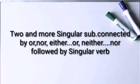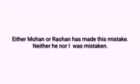Two or more singular subjects connected by 'or,' 'nor,' 'either...or,' or 'neither...nor' always take a singular verb. For example: 'Either Mohan or Rohan has made this mistake.' 'Neither he nor I was mistaken.' The subjects Mohan and Rohan are connected by 'either...or,' so the verb 'has' is singular. Likewise, 'he' and 'I' connected by 'neither...nor' take the singular verb 'was.'